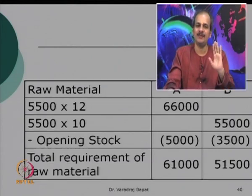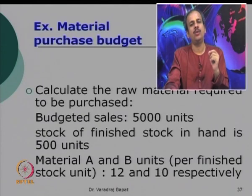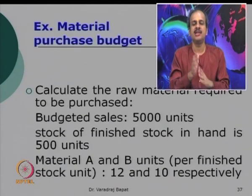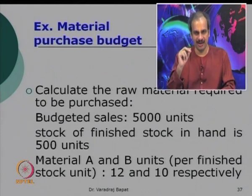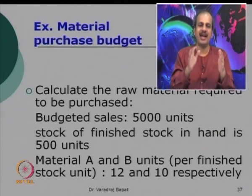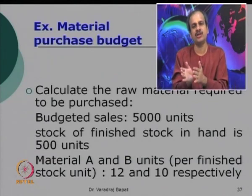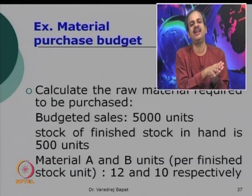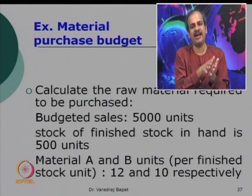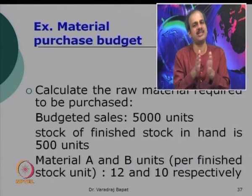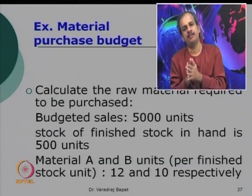What we saw right now is an example of a functional budget — this was the budget for purchase of raw material. Like that, budgets are made for each activity or each department, and those budgets are ultimately coordinated and compiled into a master budget. Last time we discussed this functional budget and master budget.